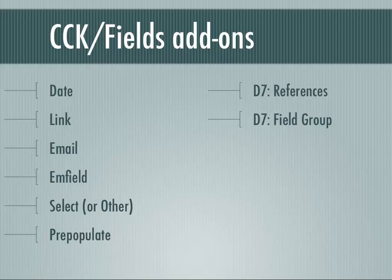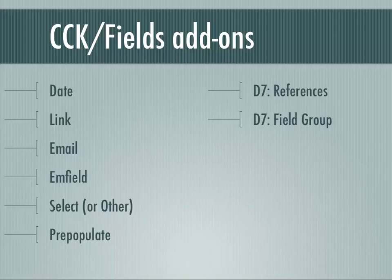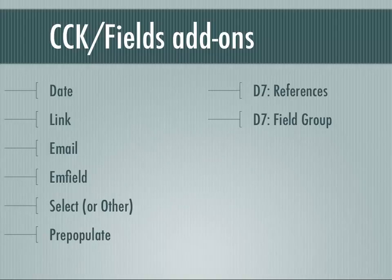Select or Other lets you have a select field with an Other option — instead of two separate fields, it gives you all that in one package. You can provide a list of options and then have your Other text field built in. Pre-populate Module lets you take values from the query string of a URL and pre-populate fields on a node edit form. So when somebody hits 'node/add/page?body=blah,' this module will pull that out of the URL and fill in your body field with 'blah.' If you have situations where you want to pre-populate fields based on special links or bookmarklets, it lets you do that.